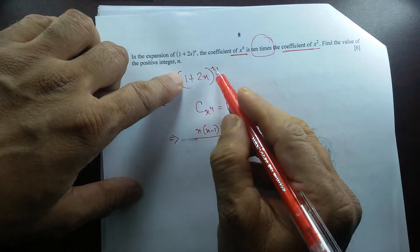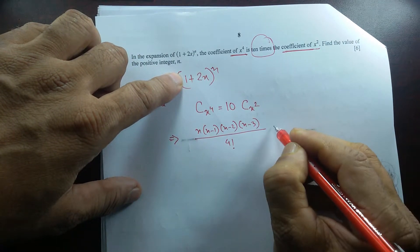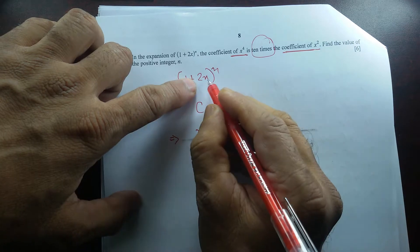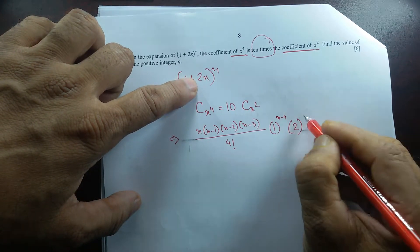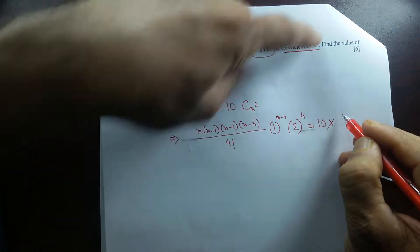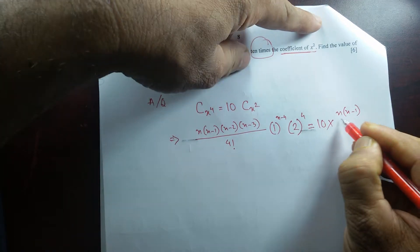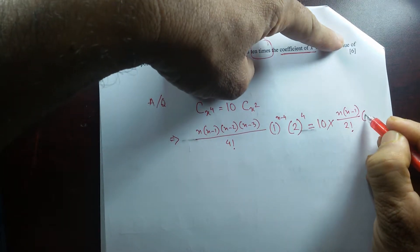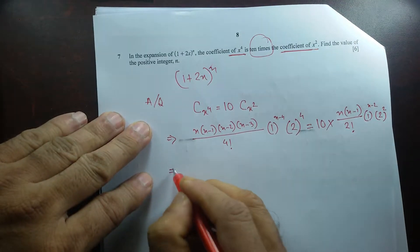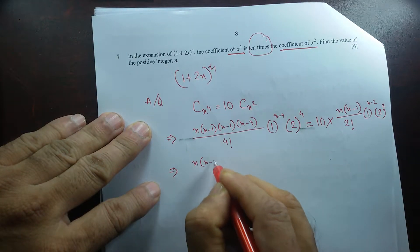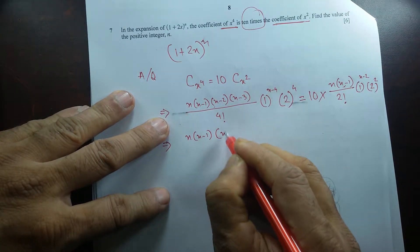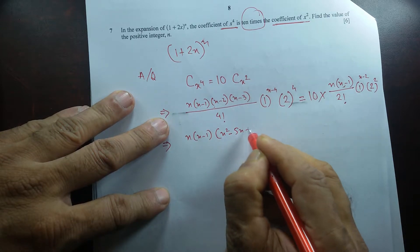Since 1 to the power (n minus 4) is just 1, and similarly for the x squared term using n, (n minus 1) over 2 factorial times 2 squared. I don't need to write x since we're dealing with coefficients directly. Cancelling n times (n minus 1) from both sides, and simplifying the factorials, I'm left with (n squared minus 5n plus 6) on the numerator of the left side.